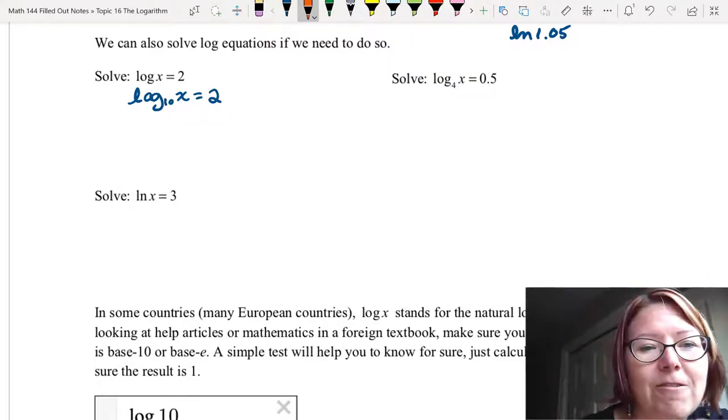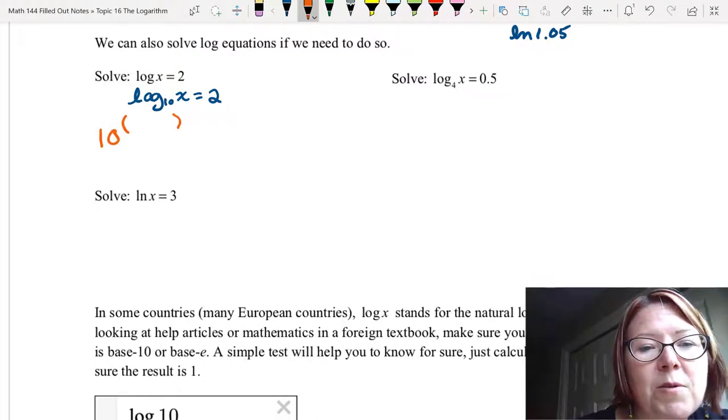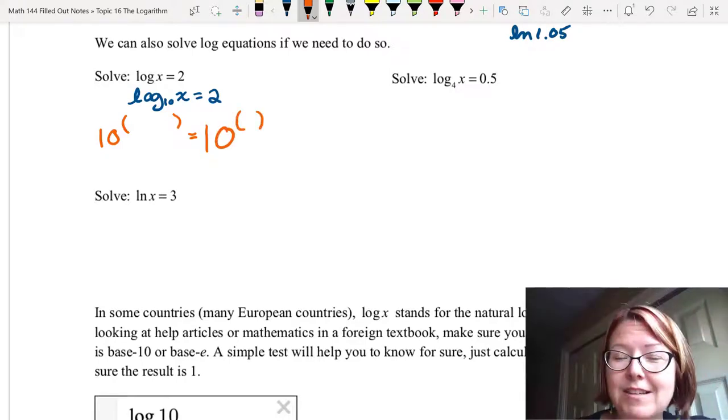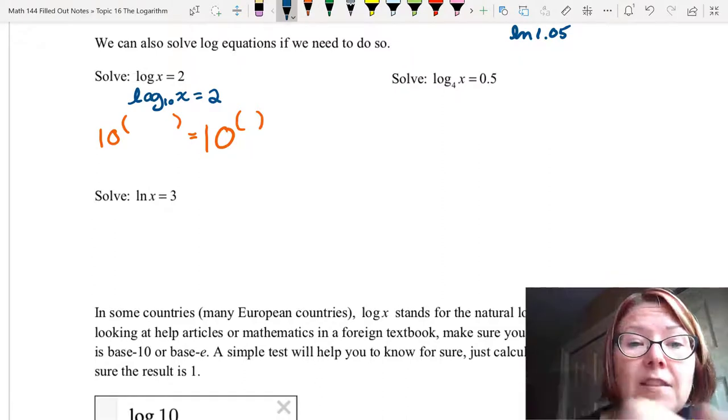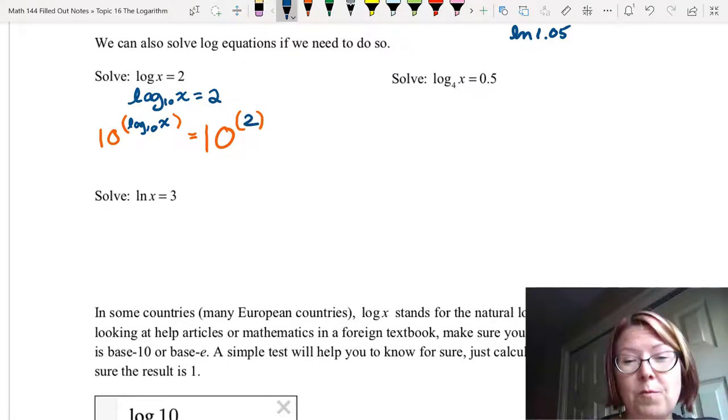Again, I'm writing the inverse in different colors so you can see it. I'm going to do 10 to the and leave myself a parentheses in the exponent. So that's on the left. And I'm going to do 10 to the and put a parentheses in the exponent on the right. In the left set of parentheses, I'm going to write log base 10 of x. And in the right hand set of parentheses, I'm going to put 2. So now if I read it, I have 10 to the log base 10 of x equals 10 to the second.